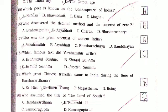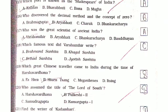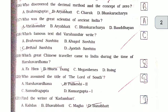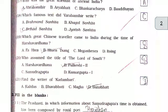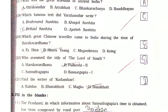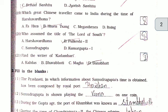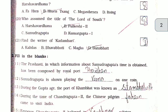The poet known as the Shakespeare of India is Kalidas. Who discovered the decimal method and the concept of Zero? Aryabhatta. Who was the great scientist of ancient India? Varahamihir. Which famous text did Varahamihir write? Brihat Sanhita. Which great Chinese traveler came to India during the time of Harshavardhan? Xuanzang.